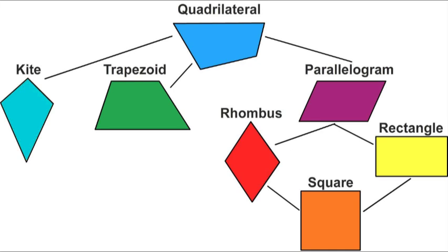Quadrilaterals have four sides. We can classify them like a family tree — they're all related and different. Let's see.